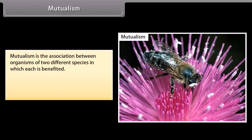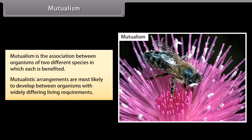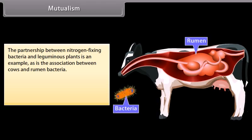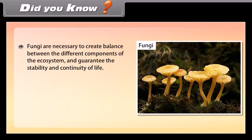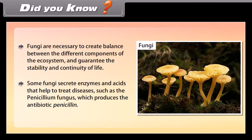Mutualism is the association between organisms of two different species in which each is benefited. Mutualistic arrangements are most likely to develop between organisms with widely differing living requirements. Examples include the partnership between nitrogen-fixing bacteria and leguminous plants, and the association between cows and rumen bacteria, which live in the digestive tract and help digest plants eaten by the cow. Associations between tree roots and certain fungi are often mutualistic. Notably, fungi are necessary to create balance in the ecosystem; some fungi secrete enzymes that help treat diseases, such as the Penicillium fungus, which produces the antibiotic penicillin.